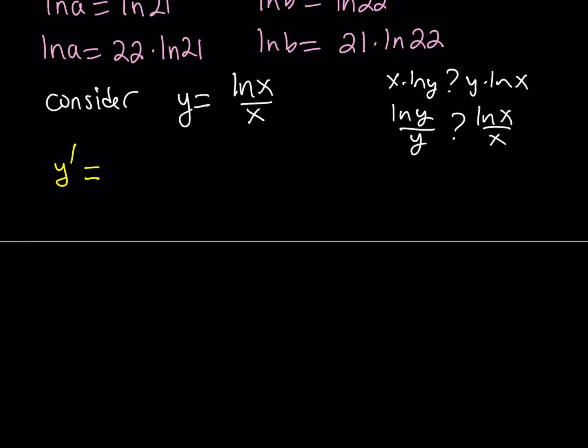This is a quotient, so I'm going to use the quotient rule. The derivative of the top, which is 1 over x, multiplied by the bottom, minus the derivative of the bottom, multiplied by the top function. And all of that is going to be divided by the denominator squared.